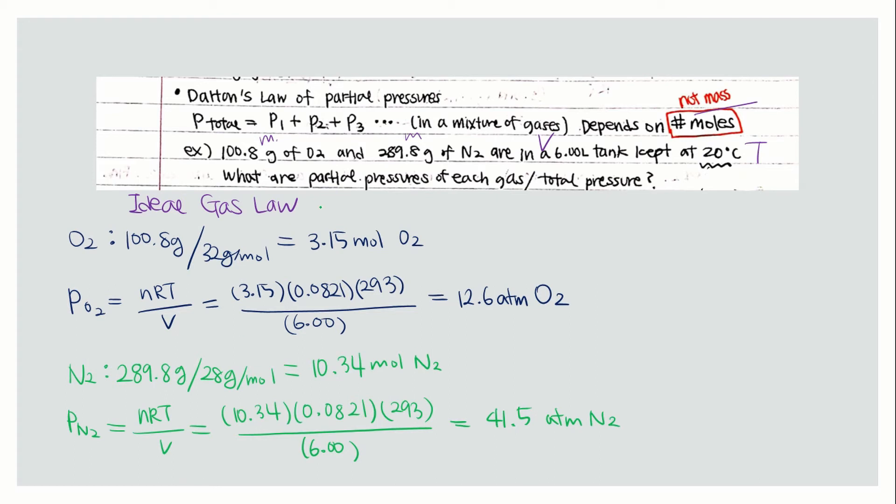You found the partial pressures of each gas. For total pressure, you simply add these two partial pressures, which gives you the total pressure of 54.1 atm.